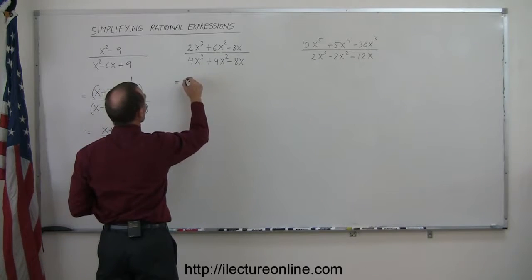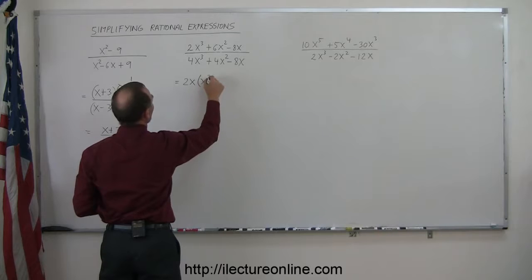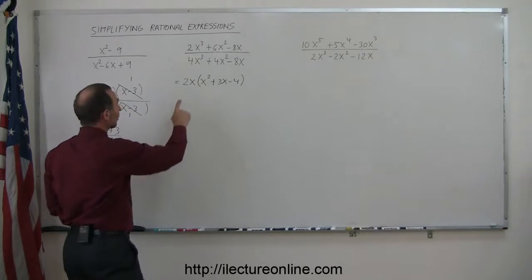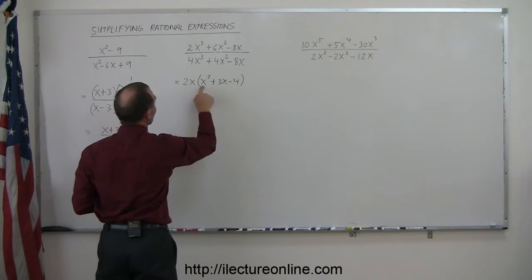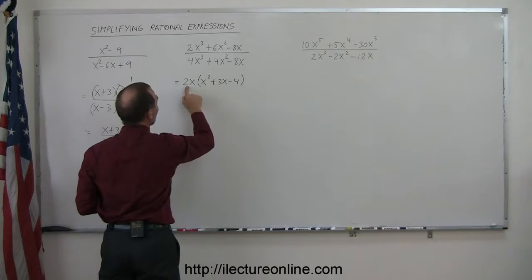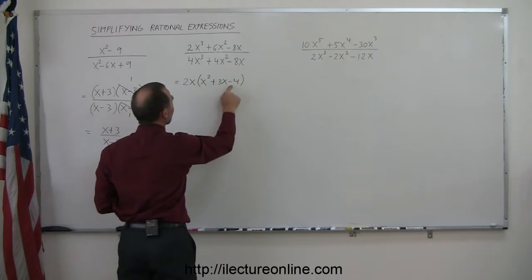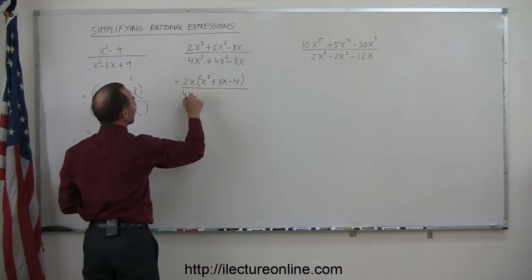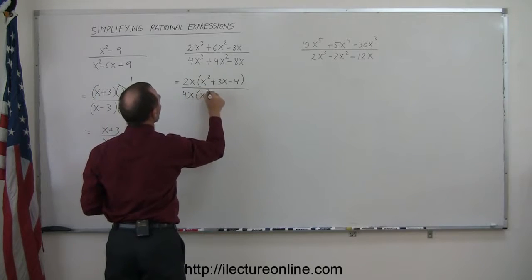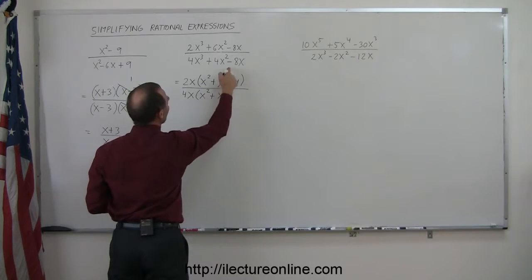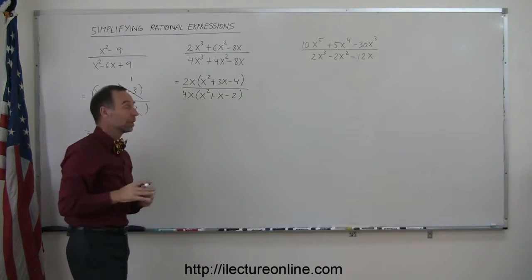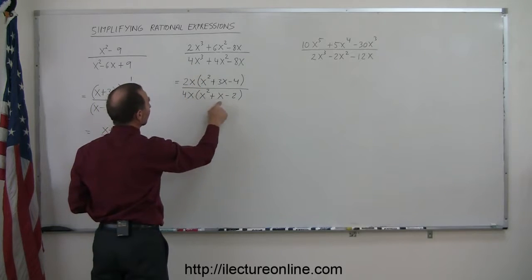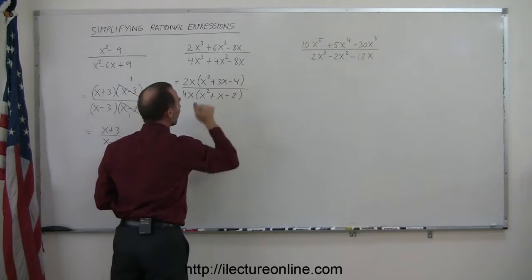So this is equal to 2x times (x² + 3x - 4). Just to make sure we did it correctly: 2x times this gives us 2x³, 2x times this gives us 6x², 2x times this gives us -8x, so we're good. Divided by — if I factor out a 4x — I have remaining (x² + x - 2). Multiply back in: 4x times this gives 4x³, 4x times this gives 4x², 4x times this gives -8x. We're good to go.